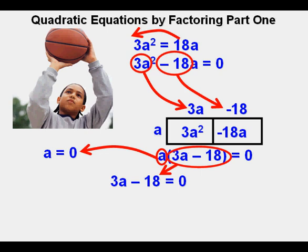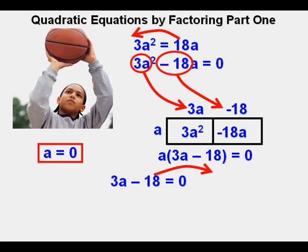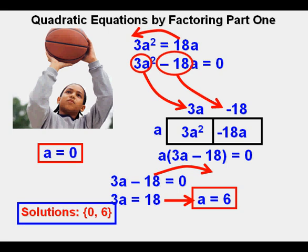He now rewrites the equation as a times quantity 3a minus 18 equals 0. He separates the two factors into two equations, a equals 0 and 3a minus 18 equals 0. One of the solutions is a equals 0. We need to solve for the other solution. He moves negative 18 to the right side. He has 3a equals 18. He solves for a by dividing both sides by 3 to get a equals 6, and that is the other solution. So Joe's solutions are a equals 0 and a equals 6, and this is our answer in set notation.